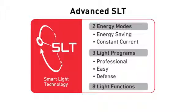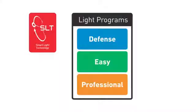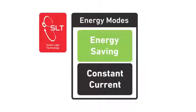I'm going to show you today how to use the advanced SLT. With SLT, everything is operated with a series of touches and full clicks. With advanced SLT, there are 3 light programs — defense, easy, and professional — 8 light functions within those 3 programs, and 2 energy modes: energy saving and constant current.